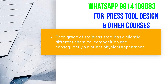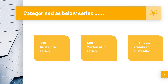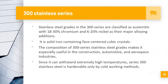Based on their composition, stainless steels are categorized into the 300 series, 400 series, and 900 series. The 300 series is also known as the austenitic series, the 400 series as the martensitic series, and the 900 series as the non-stabilized austenitic series.